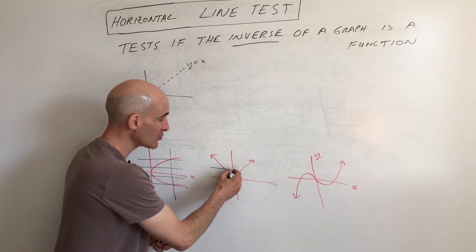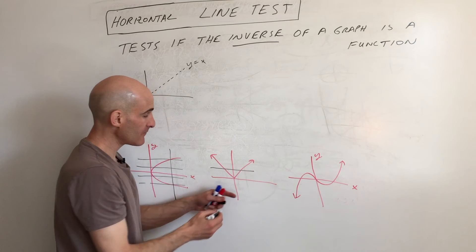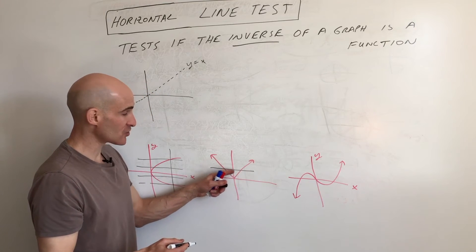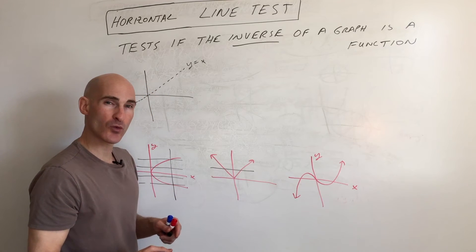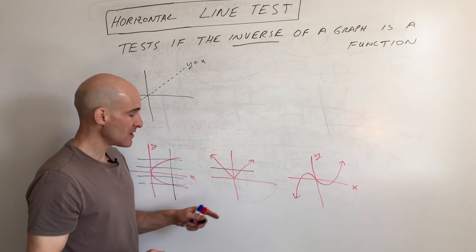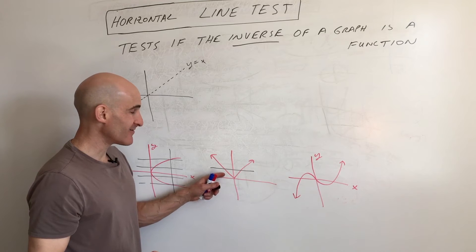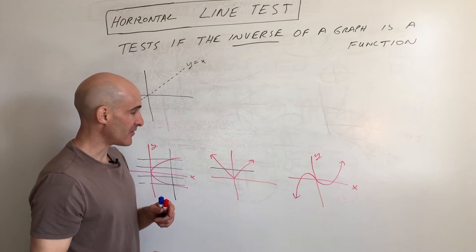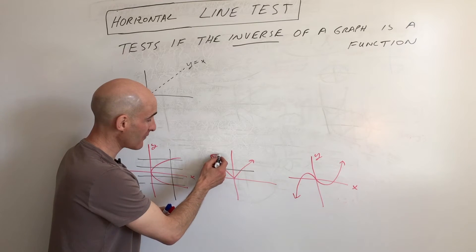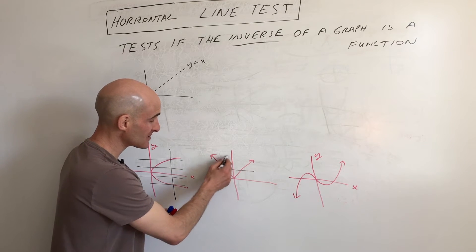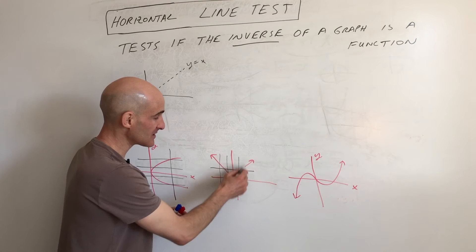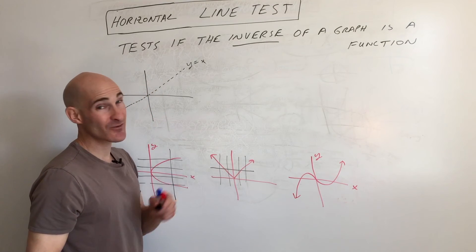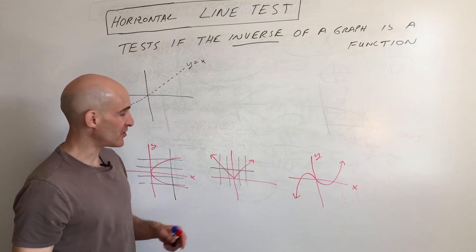This one here, if we draw a horizontal line and scan from low to high, you can see it's crossing at more than one point. So that means the inverse of this graph is not a function. This graph itself passes the vertical line test — this graph is a function, but its inverse would not be a function.